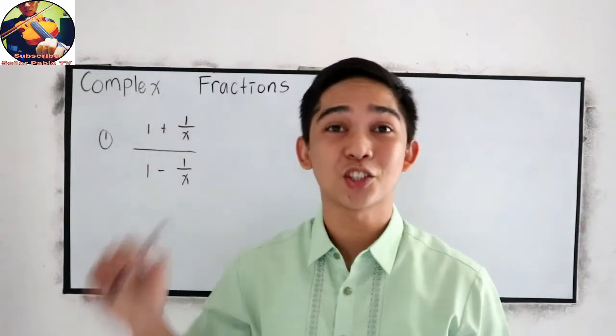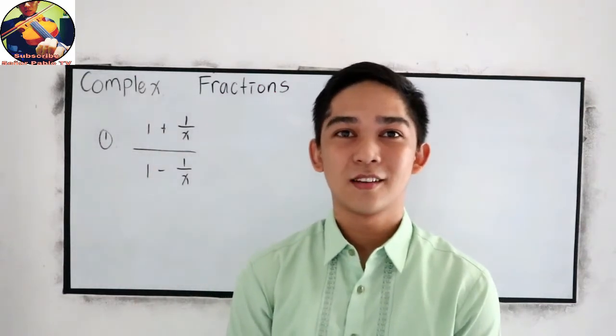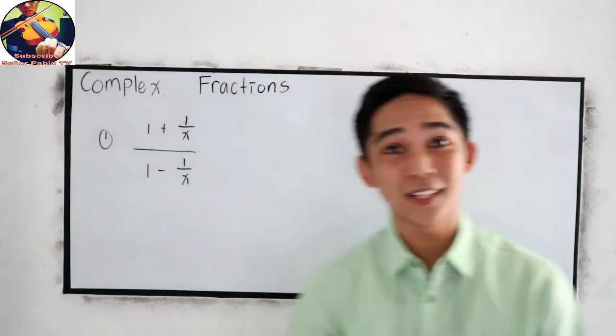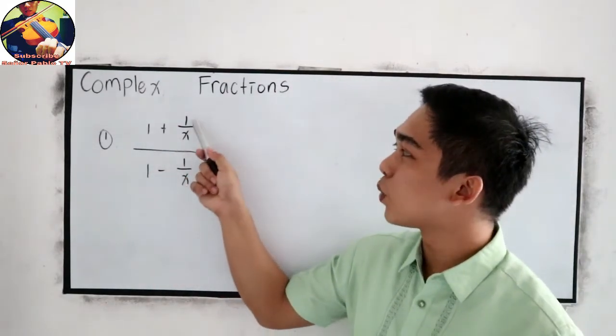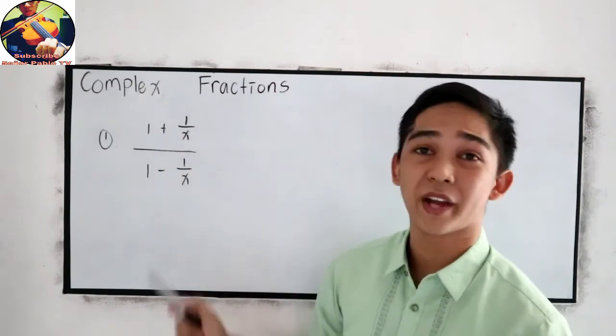Simplifying complex fractions. So let's start. Number one, what if the given is 1 plus 1 over x all over 1 minus 1 over x?